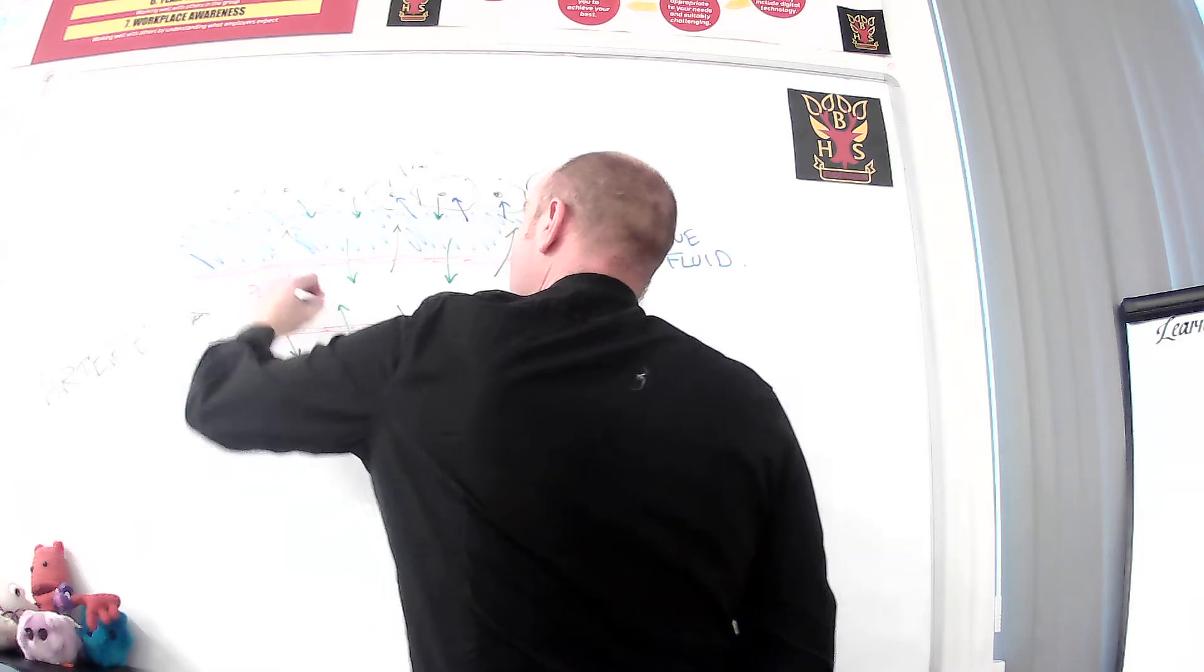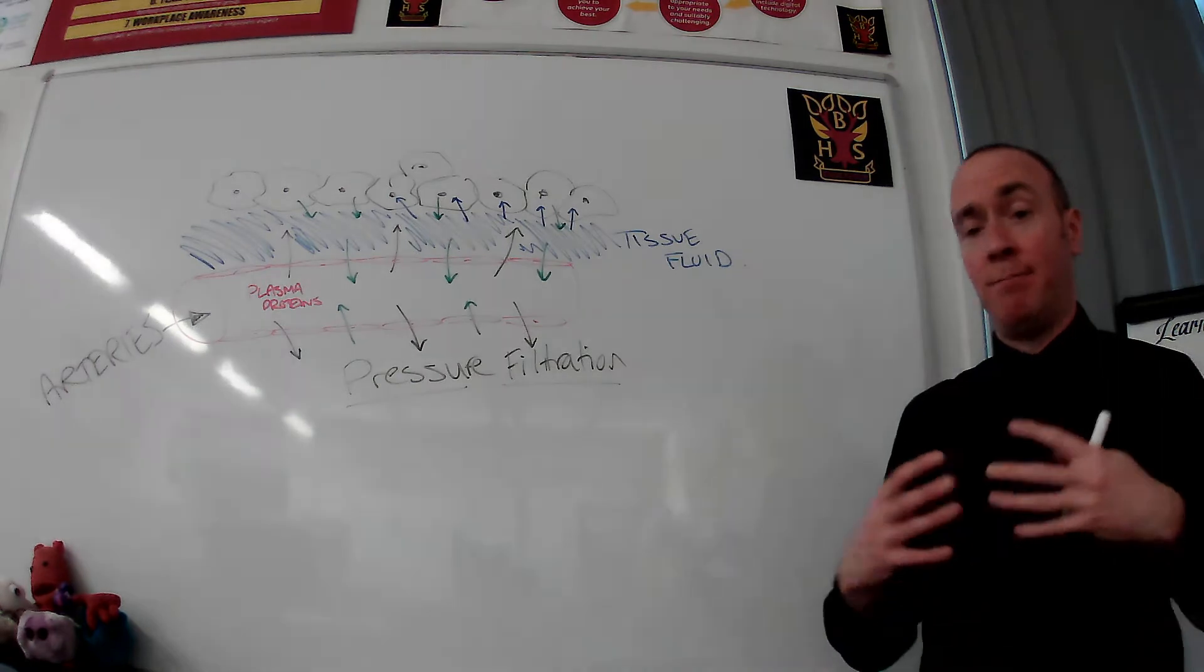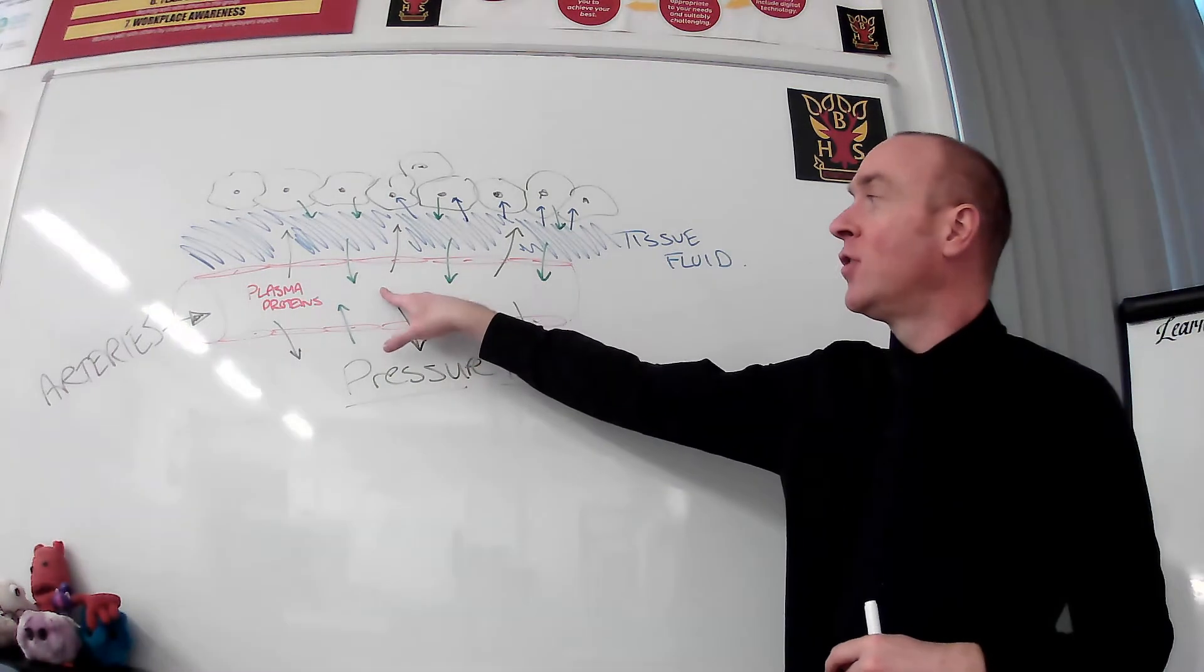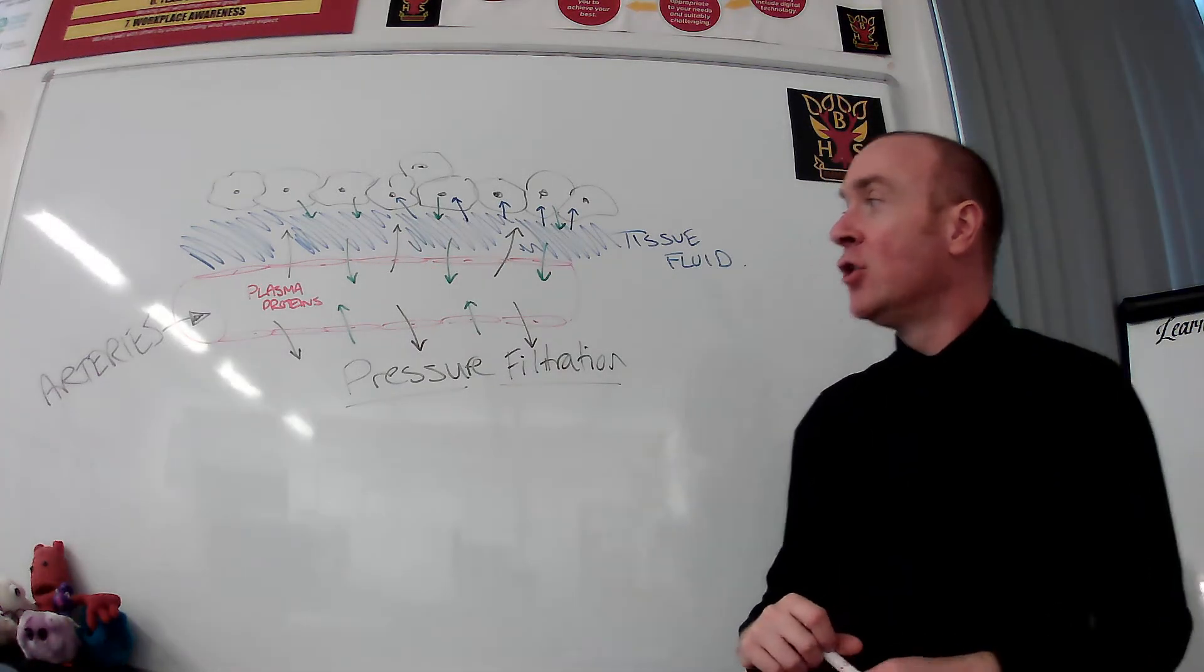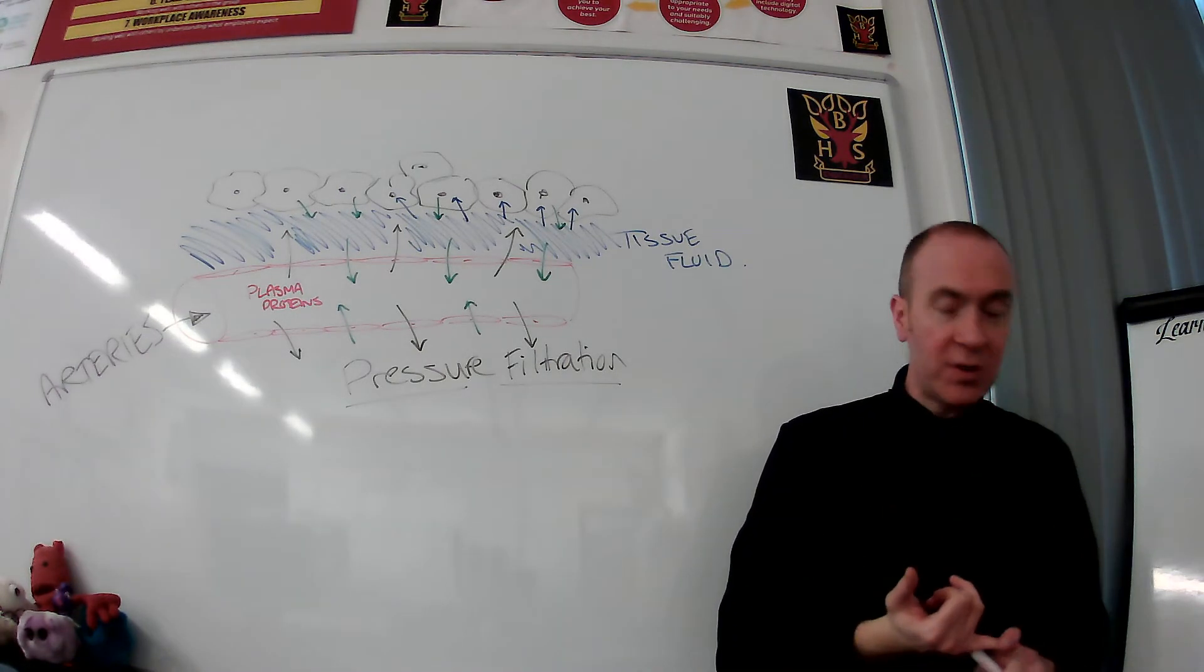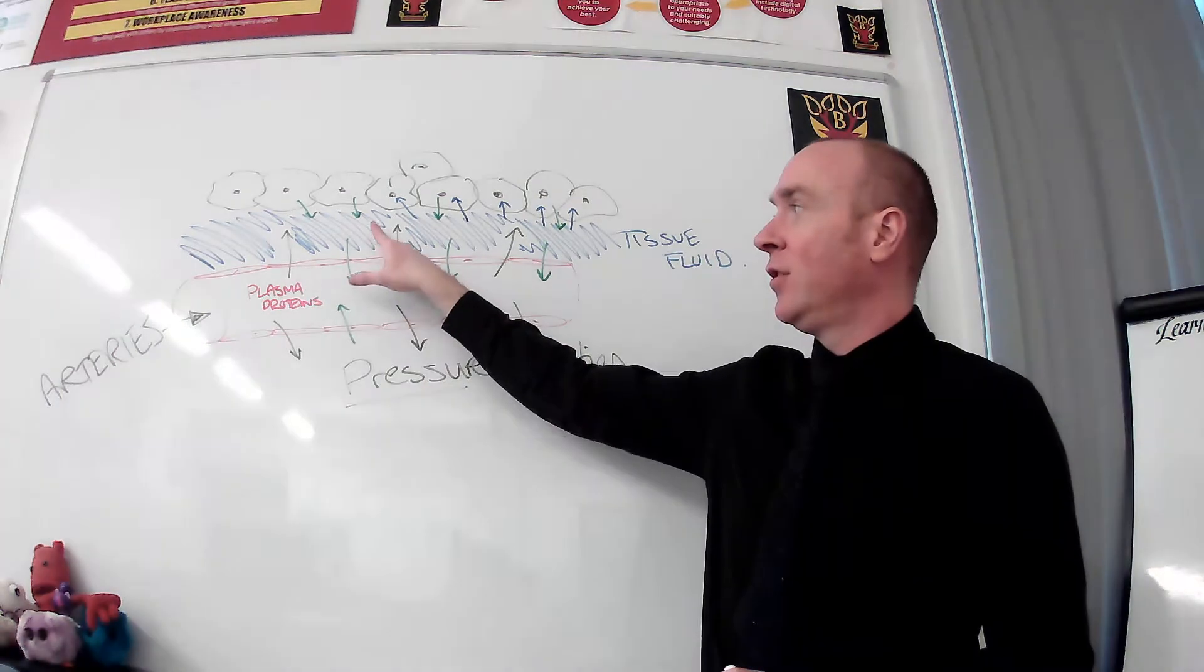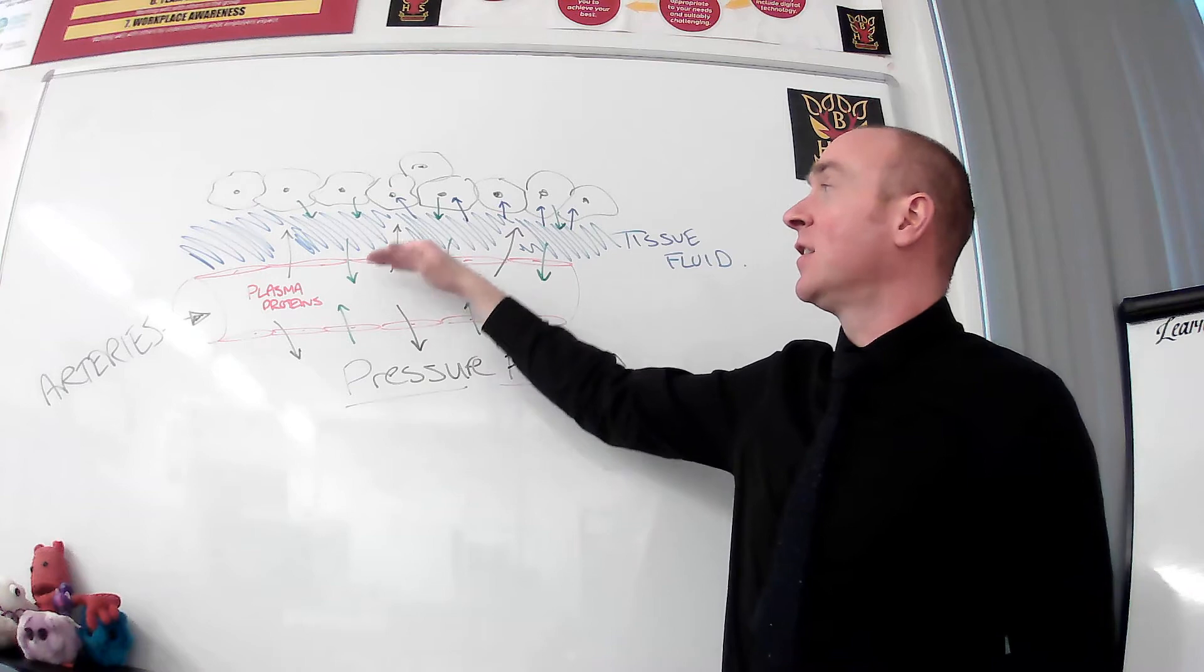Now because of our knowledge so far we should understand plasma proteins are quite large. They're large big molecules made of lots and lots of amino acids all joined together. So they're not small enough that they can be filtered out through pressure filtration. So the only real content difference between blood plasma and tissue fluid is that tissue fluid does not have plasma proteins in it. They stay in the bloodstream. Everything else gets kind of forced out.